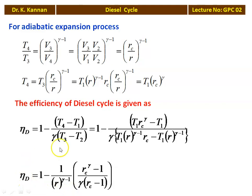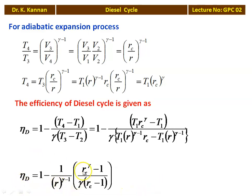Looking at this equation, you can immediately recognize that the first term, 1 − 1/R^(gamma−1), is the efficiency of the Otto Cycle. The efficiency of the Diesel Cycle depends on three parameters: R (compression ratio), R_C (cutoff ratio), and gamma (the adiabatic index). The Diesel efficiency equals the Otto efficiency multiplied by the term [R_C^gamma − 1] / [gamma(R_C − 1)].